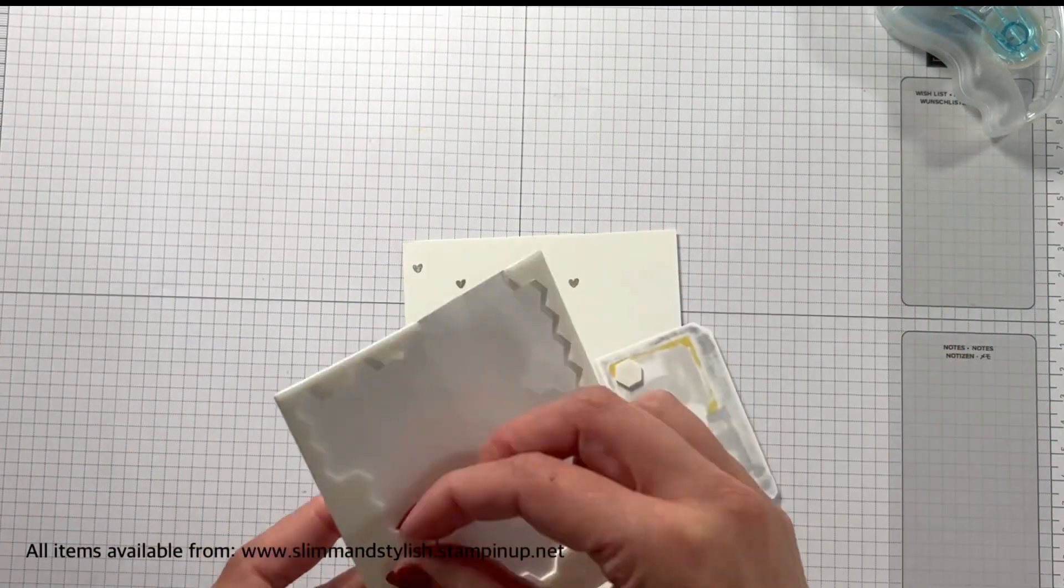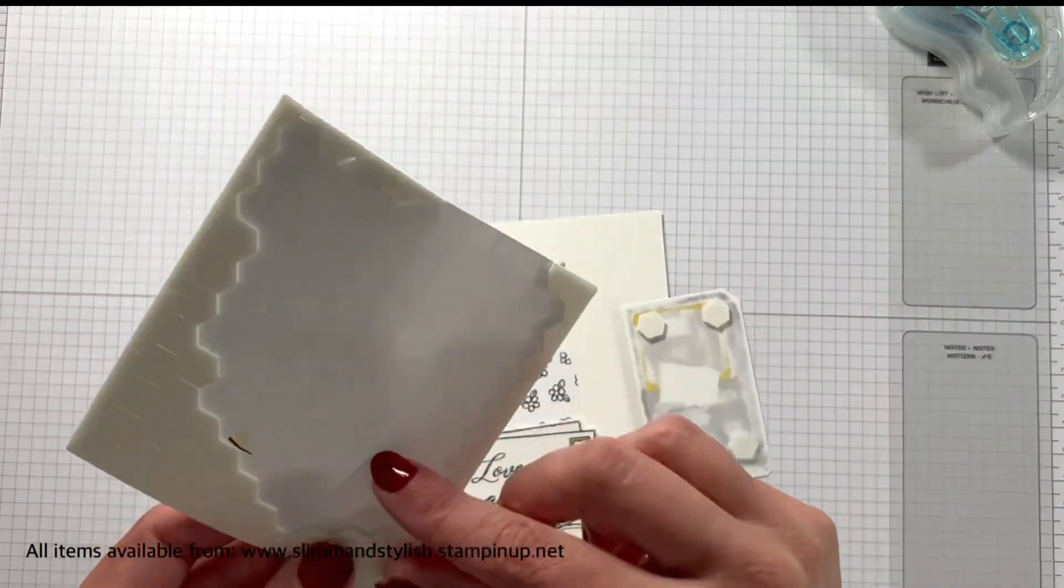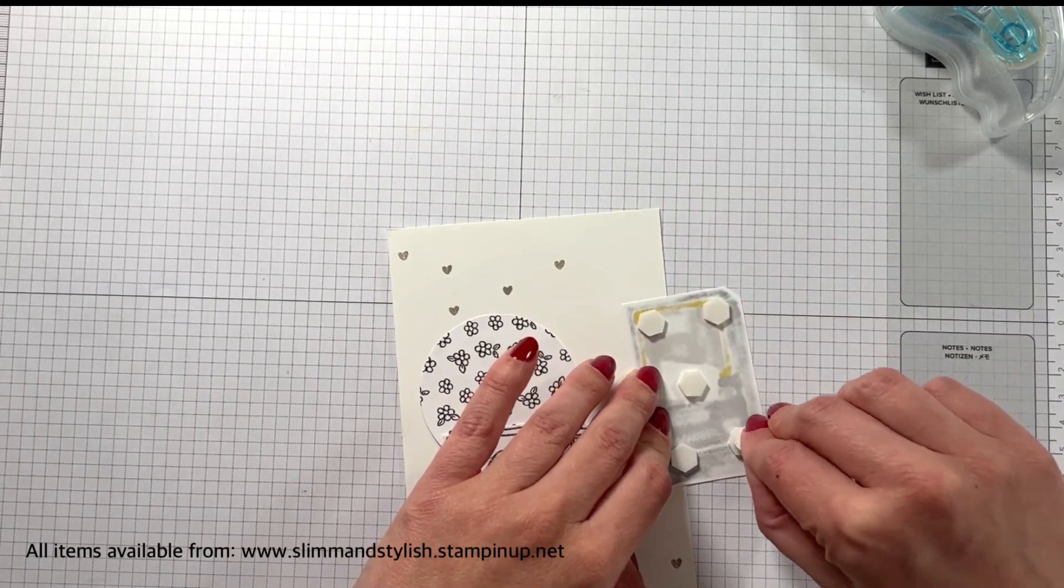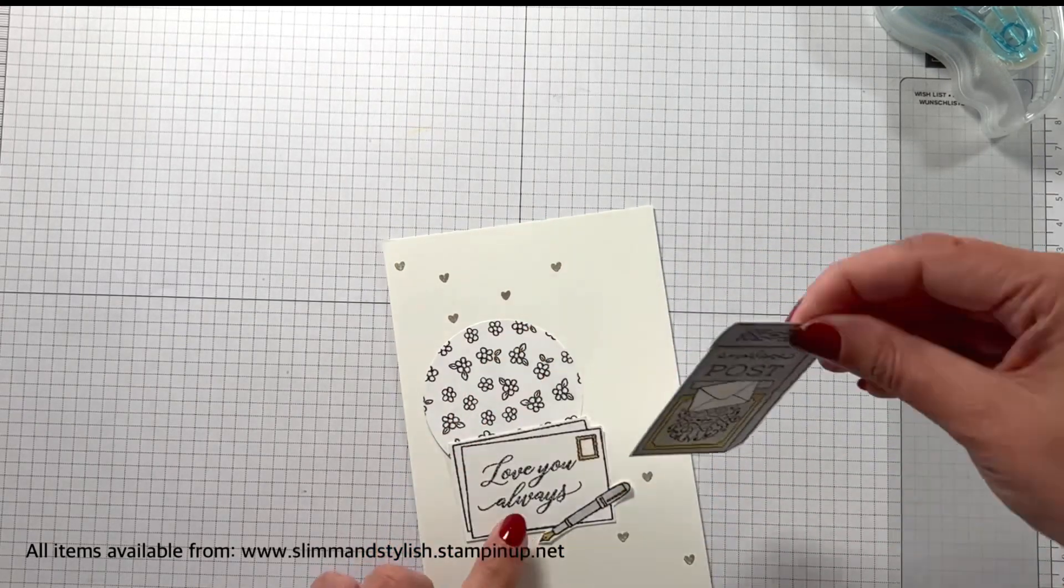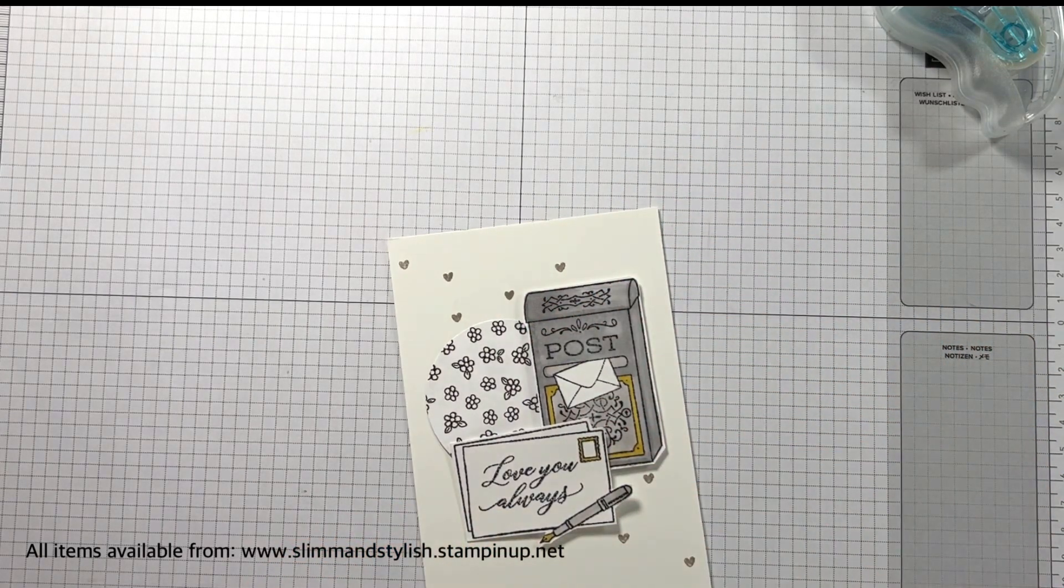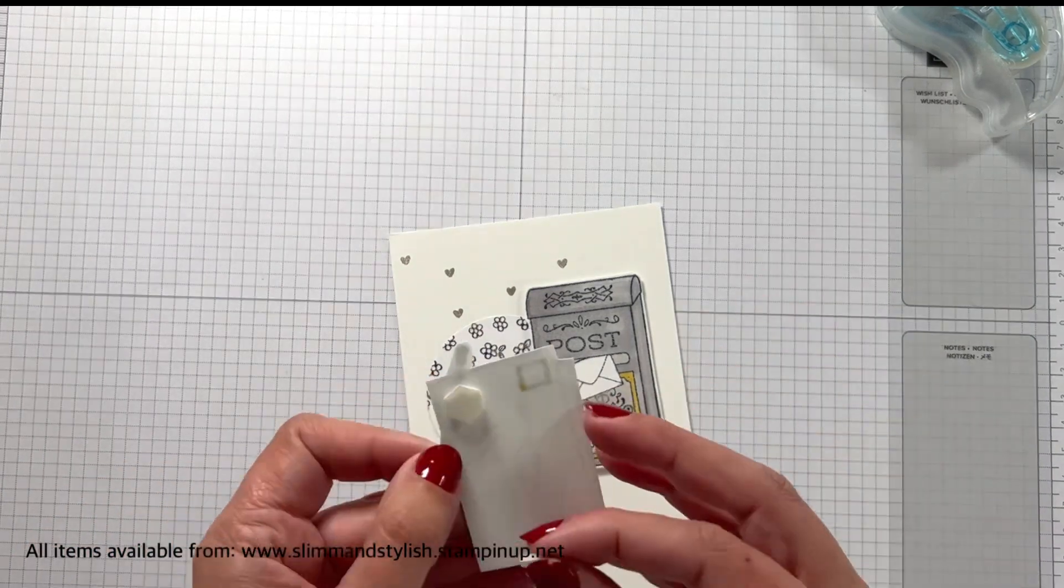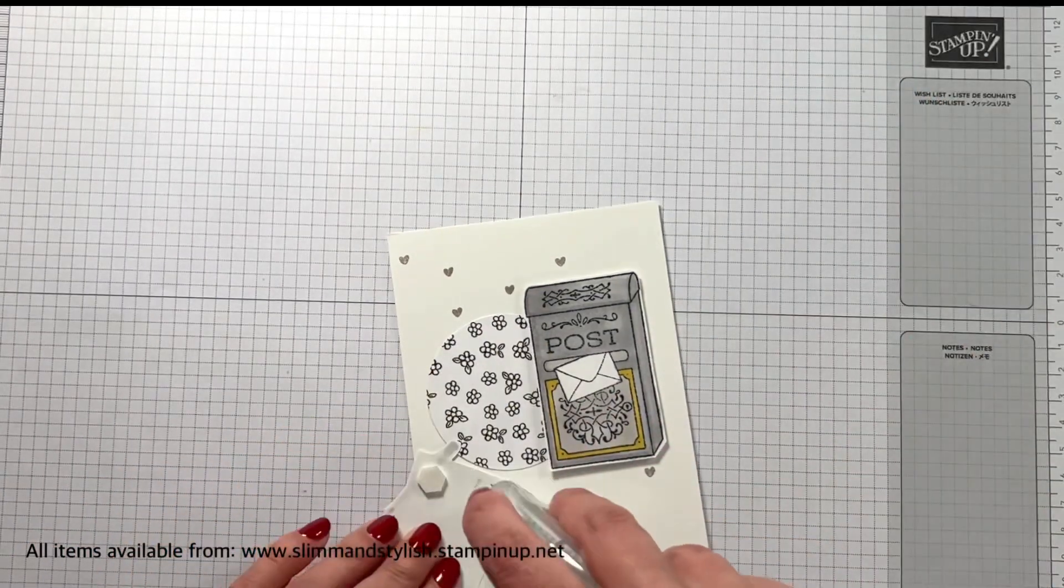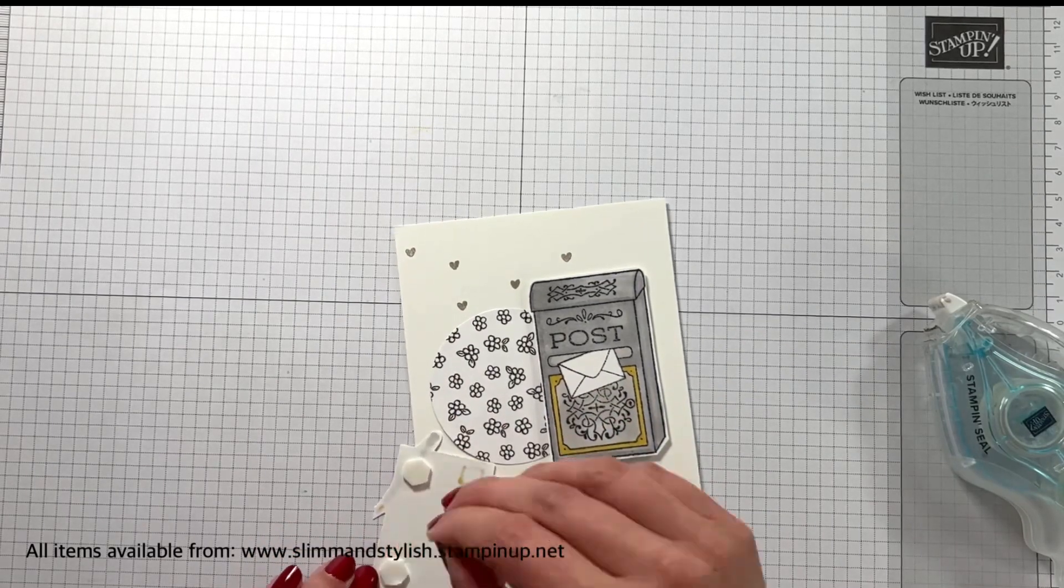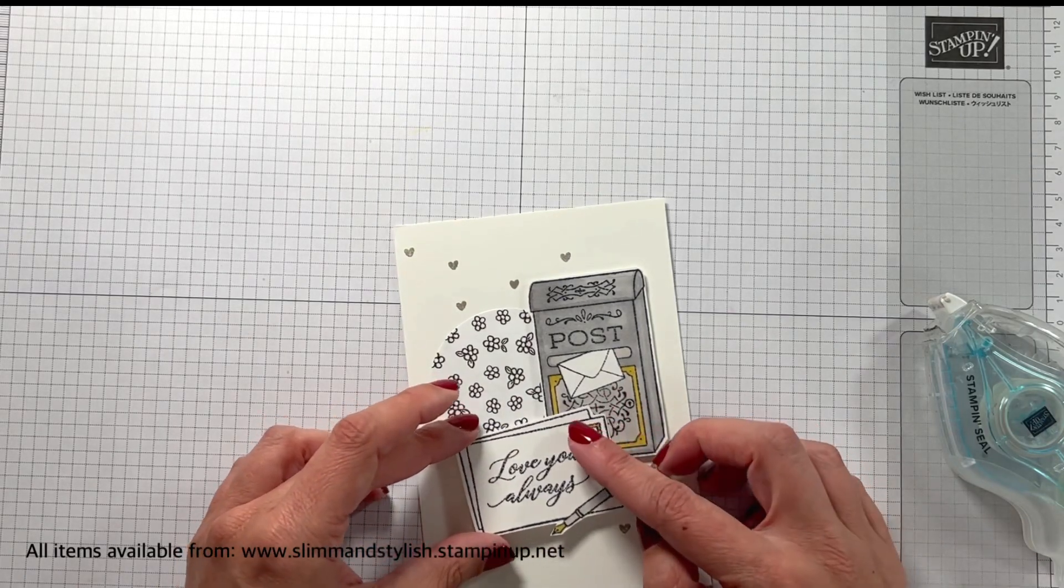I'm using a mixture of adhesive. So I used my seal adhesive for the DSP to keep it flat and still and I'm using my dimensionals for the other pieces to pop them up. So you just want to pop that one up behind the envelope. Now the envelope you want to be clever with, with your dimensionals, you don't want to put a dimensional where it's going to sit on the letterbox. So just put a couple on the bottom and then it will sit flat just at the top so you can use your adhesive to stick that down and then that will stick onto the letterbox and it will all be the same height. And there we go. Love you always.